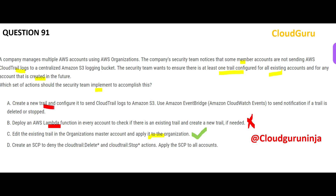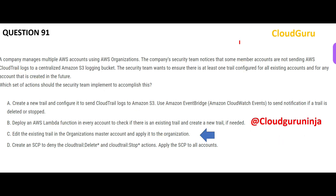Another option says to create a new trail, configure it to send trail logs to S3, then use CloudWatch Events to send notifications if a trail is modified — but it does not tell you to associate that trail with all accounts or the entire organization, so that information is missing and this option is wrong. Option D says to create an SCP to deny CloudTrail delete or stop actions — that assumes someone stopped or deleted an existing trail, which is not necessarily the issue here. Option C is my final answer.